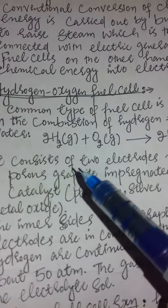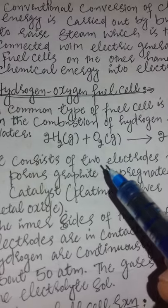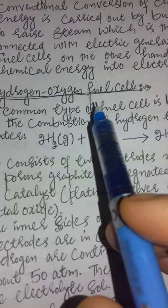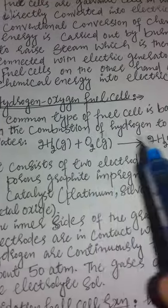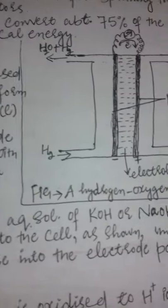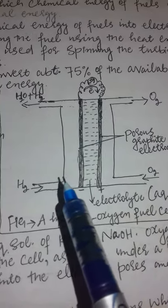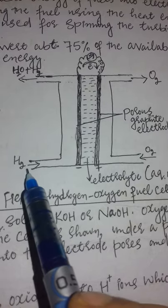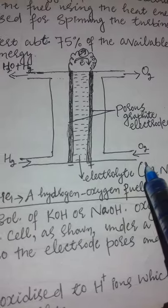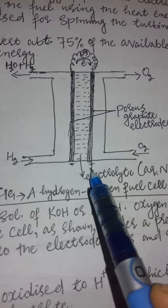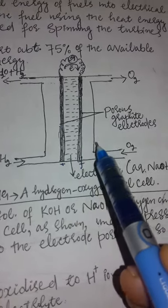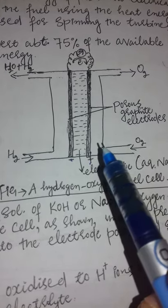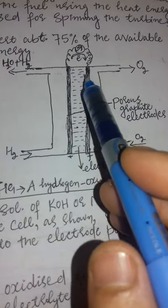In the hydrogen-oxygen fuel cell, the fuels are hydrogen and oxygen. Let's see its construction. In this cell, hydrogen is passed from one side and oxygen from the other — so we have two fuels. Hydrogen is passed at the anode, which is on the left, and oxygen is passed at the cathode, which is on the right. Both are porous graphite electrodes, and they are porous so that hydrogen and oxygen can easily pass through to the electrolyte.